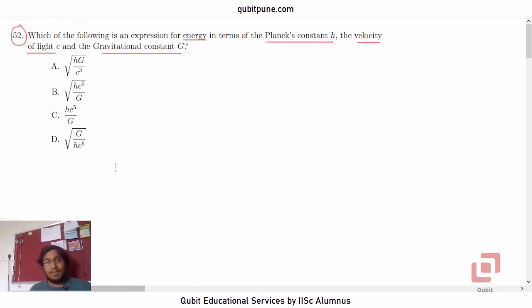Now, to begin with, let us first write down the dimensions of the Planck's constant, the velocity of light, and the gravitational constant. Planck's constant has SI unit joule second. Then what about speed of light? It is meters per second. And for Newton's constant of gravitation, what will be its unit? Newton meter squared per kg squared.